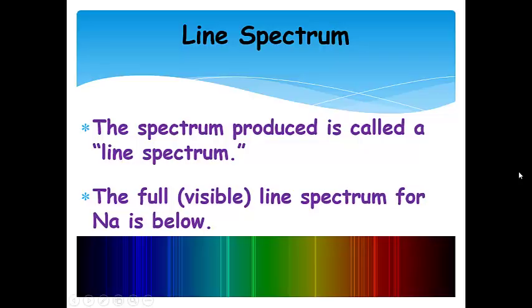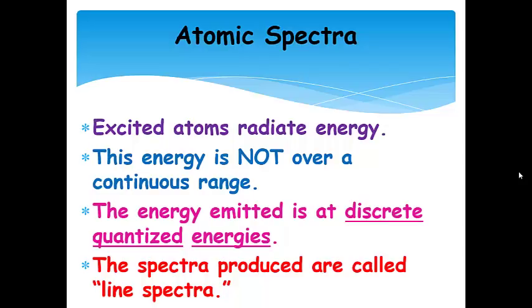When you excite atoms, as they relax, they radiate energy—they give off photons. This energy is not over a continuous range. The white light bulb gives us a continuous range of colors. When excited atoms emit energy, it's only at discrete quantized energies, only at certain wavelengths. We see photons emitted with only certain wavelengths.